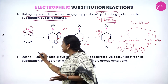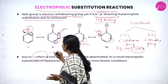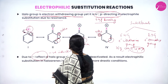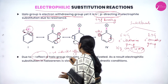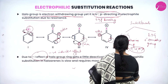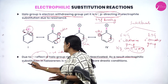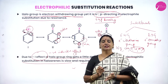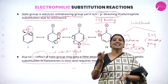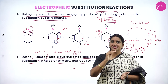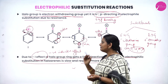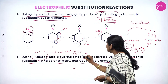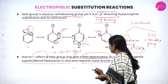Due to the negative inductive effect, the halo group causes the ring to become slightly deactivated. As a result, electrophilic substitution in a haloarene ring is slow and requires more drastic conditions — meaning high temperature as well as high pressure — compared to parent benzene. So halo rings undergo slow electrophilic substitution compared to benzene because of the negative inductive effect of the halo group.